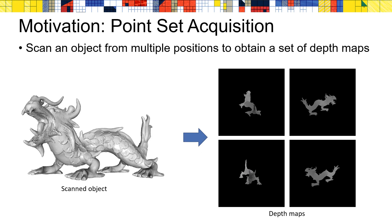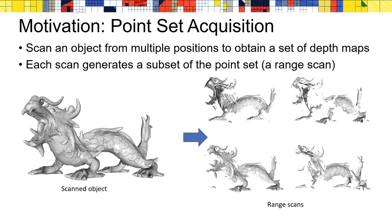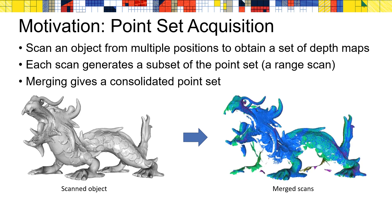To motivate this problem, let's consider how the input to the reconstruction process is obtained. Typically, we have a model that is imaged from multiple directions using a calibrated depth camera. Each depth map can be used to generate a subset of the input points. In addition, since each depth map is sampled on a regular grid, local neighborhood information can be used to estimate properties like surface normals, allowing us to obtain a sampling of the oriented points from the surface. Using the calibration information, these oriented points can be brought into a consistent coordinate frame, generating a consolidated point set.